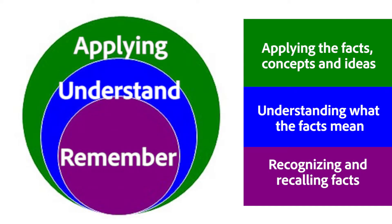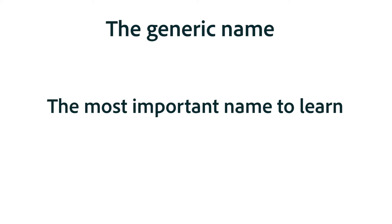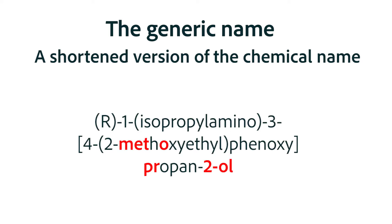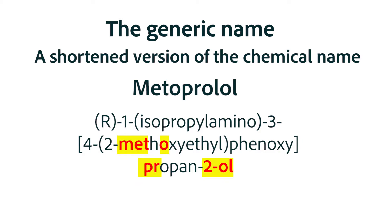The most appropriate drug name to learn is the generic name of the medication, and if you have time, possibly one of the most frequently used brand names. The generic name is a shortened version of the chemical name. For instance, the generic name for this chemical structure is metoprolol. You'll never need to remember the chemical name or exactly how we convert it to the generic name, but I do want to stress one important point here and come back to that topic later with a lot more information.